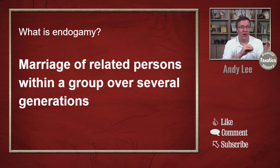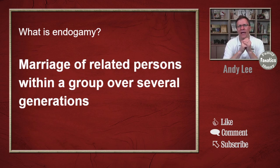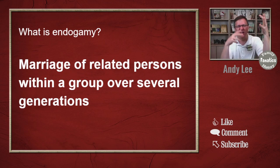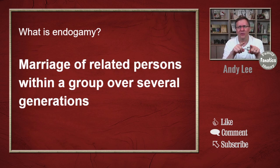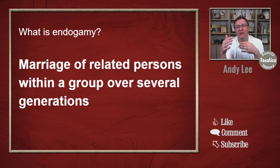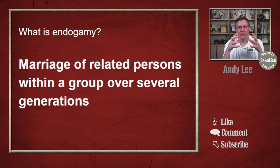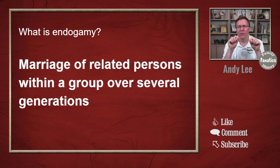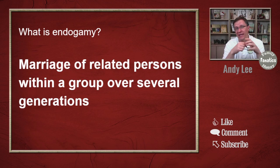Now, this is different from pedigree collapse — when you have somebody that you're related to multiple ways because they or an ancestor of theirs married within the same family, like brothers marrying sisters. The key to endogamy is really these several generations — in a lot of cases we're talking about hundreds of years of the same group of people marrying within this small group, with no people outside of the group marrying in.